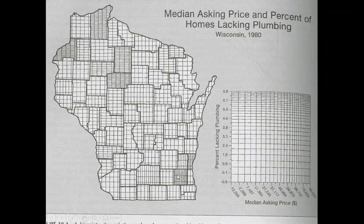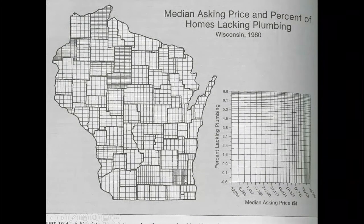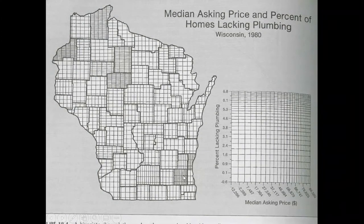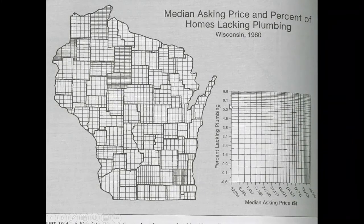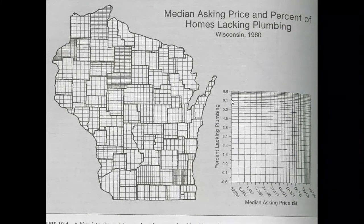This particular county here — a suburb of Milwaukee — has a higher median asking price, and the percent lacking plumbing is low, so very wide spacing. The idea is we have vertical spacing showing median asking price, and the horizontal widths between lines showing plumbing. Up here where we have lots of horizontal lines very closely spaced, the percent lacking plumbing is quite high. Before computers could produce choropleth maps with various symbologies, we used this particular crosshatch method.